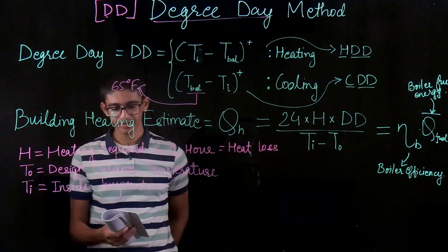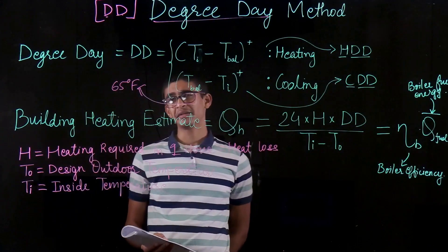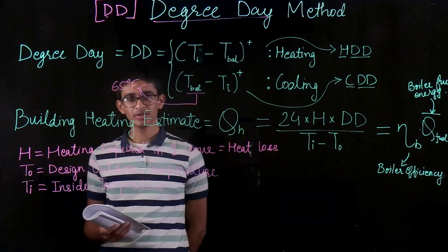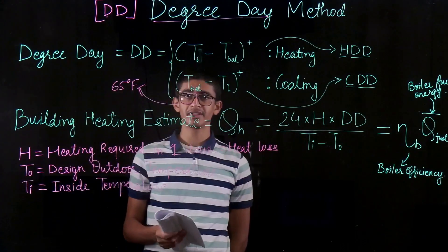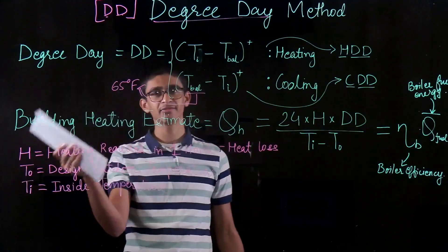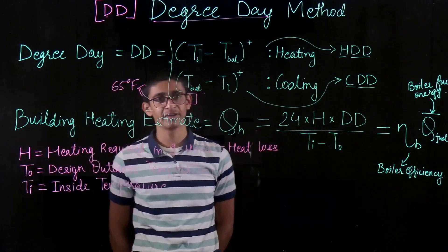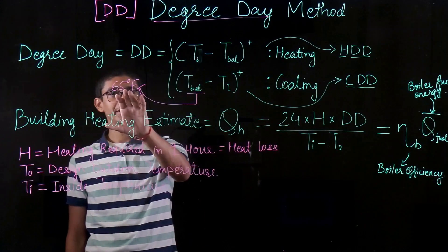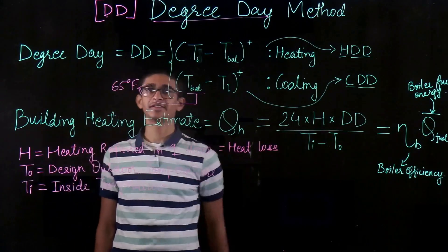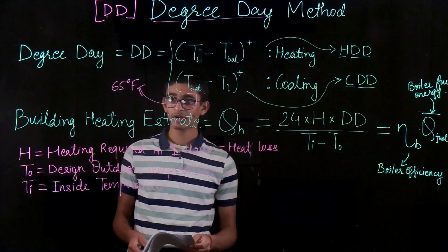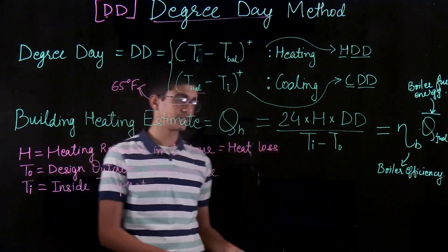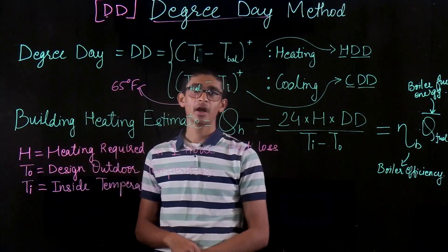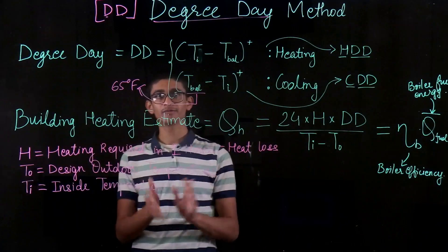The method very indirectly takes into account internal loads — because the comfort temperature inside a room is not really 65°F, it would be around 72 or 75°F. But to balance out those internal gains, we use 65°F as the balance point. Additionally, we are not zoning the building into multiple zones; this is a single-zone assumption, which is another disadvantage.